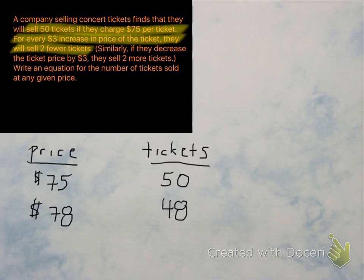For every $3 increase in price, you sell two fewer tickets. So that means if you increase the price to $78 per ticket, you're going to sell 48 tickets. And we can check this again. Increase the price by three more, ticket sales go down by two.